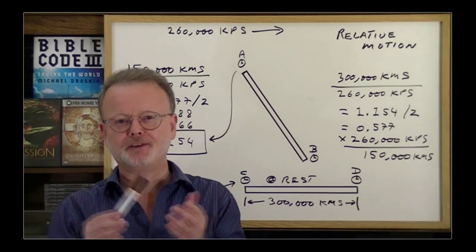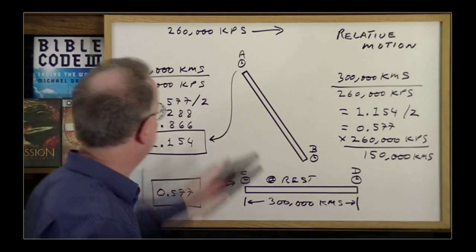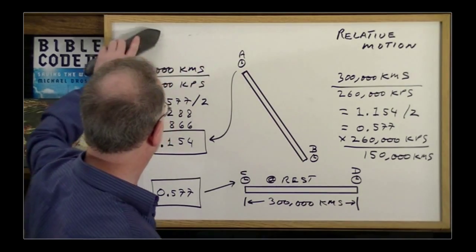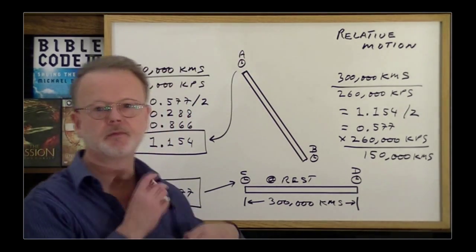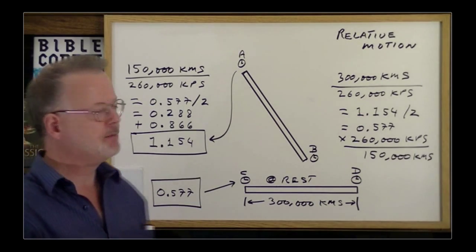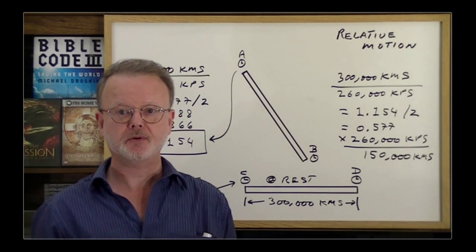And you'd say, well, I don't know, that's not really accurate. So, let's assume that we don't know how fast we're going across space. Does that mean we're stuck as far as measurements go? And the answer is no.